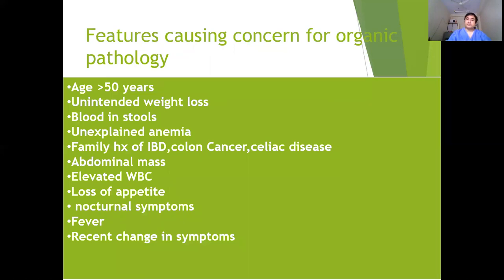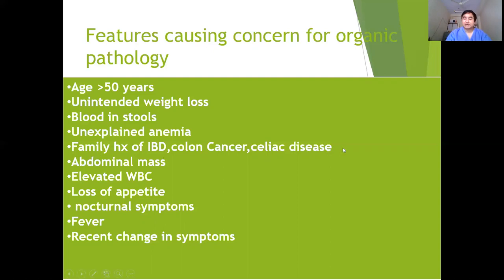Especially in some patients — like those whose age is more than 50 years — you must always think about secondary causes. Red flag features include: unintended weight loss (think colorectal carcinoma); blood in stool (colorectal carcinoma or inflammatory bowel disease); unexplained anemia (definitely colorectal carcinoma); family history of colon cancer or celiac disease; abdominal mass; elevated WBC (think infection); loss of appetite; and fever suggesting an infectious cause.